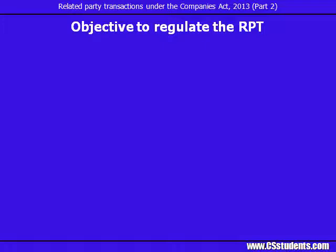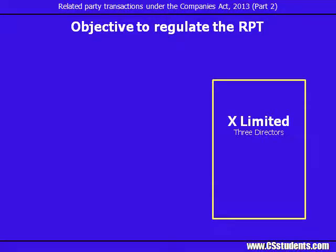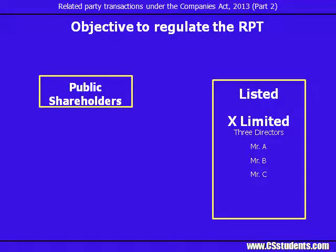Let's first understand the objective of regulating the related party transaction. The main objective is to curb the conflict of interest. For example, X Limited is a company with 3 directors — Mr A, Mr B, and Mr C. X Limited is a listed company, so it has public shareholding also. Directors run the business of X Limited. As we know, directors are supposed to have fiduciary responsibility towards the shareholders.